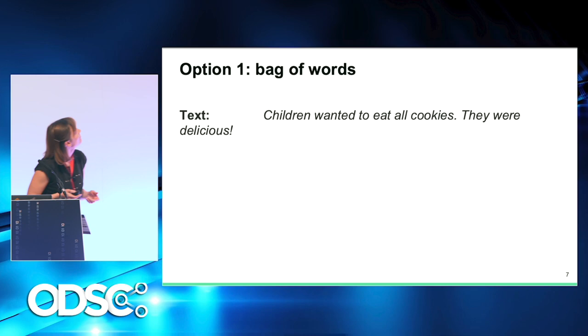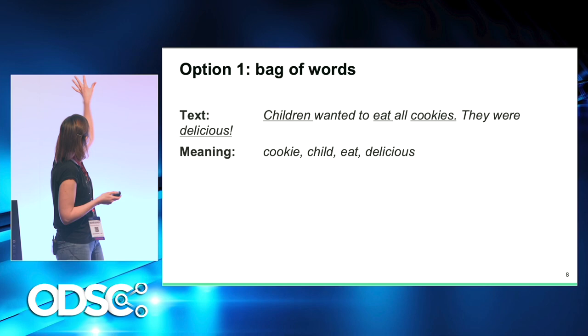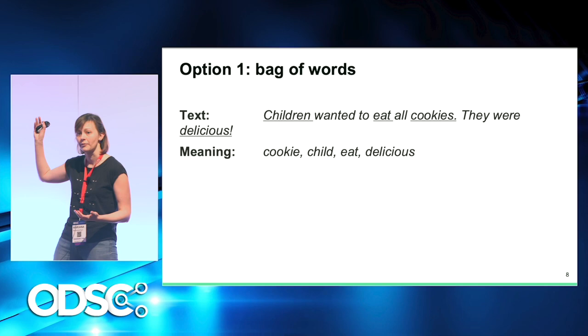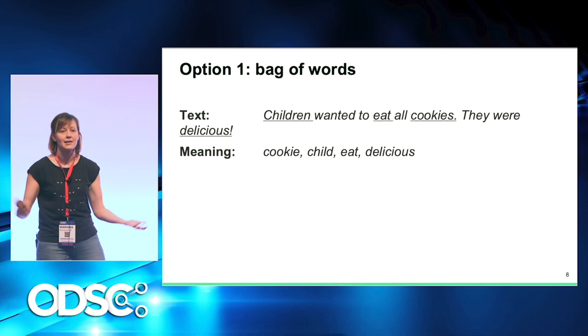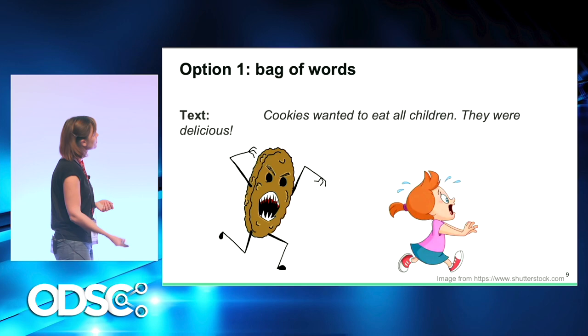We can pick all of the most important words from this text, which would be: cookie, child, eaten, delicious. For many texts in natural language processing, such a level of understanding is enough — for example, if you want to do topic modeling or extract a cloud of keywords to understand overall what a text is about. But what if I reorder the words in this text?